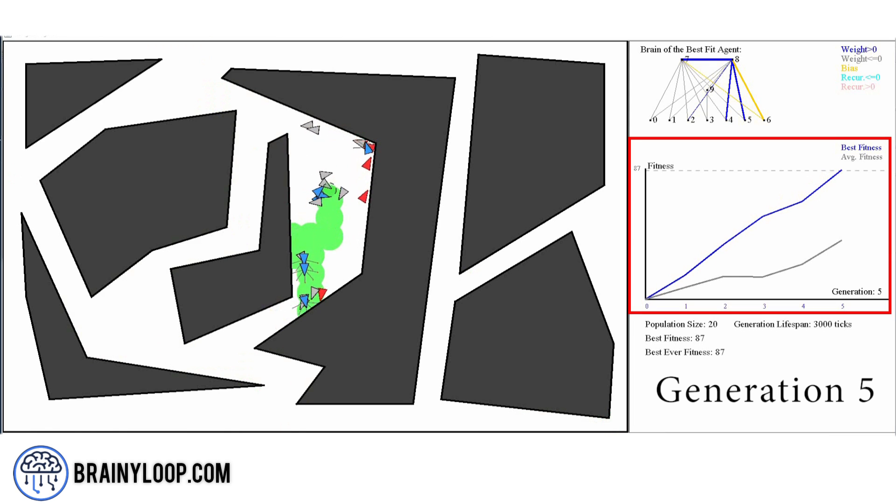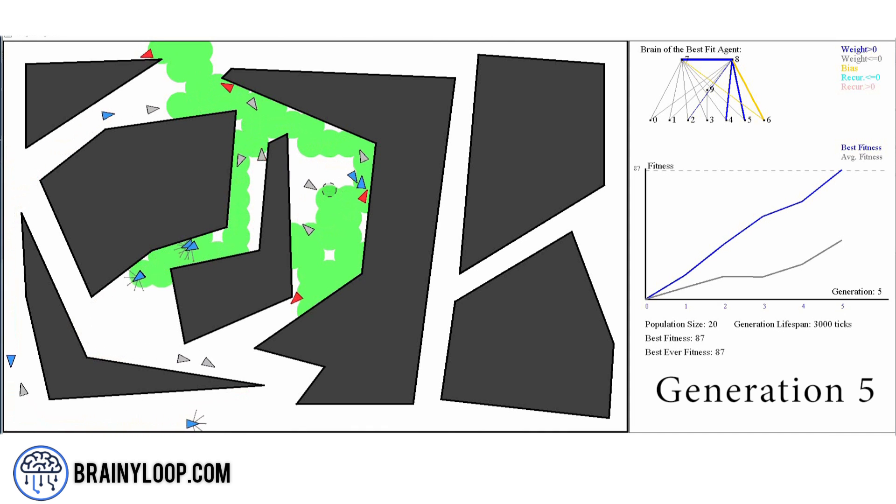The graph in the right side of the screen shows the best agent fitness of each generation in blue and the average fitness in the gray color. As you can see, the best fitness and the average fitness has increased over each generation. The neural network structure of the best performing agent is also shown at the top right corner of the screen.